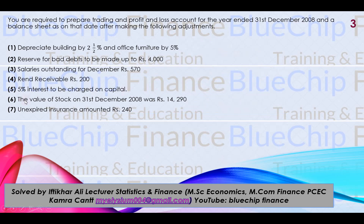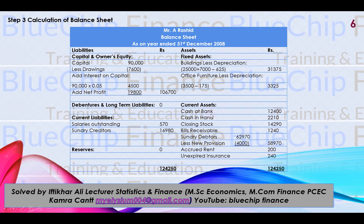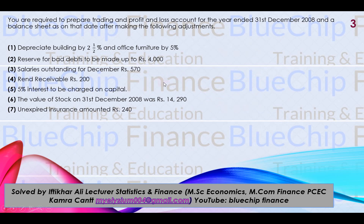The value of closing stock on 31st December 2008 was Rs 14,290. This is given in the adjustments. Closing stock is treated in two places: first, it is added to the credit side of the Trading Account (14,290), and second, it is treated as a current asset in the Balance Sheet. Note: if closing stock is given in the trial balance and not in the adjustments, it goes only to the Balance Sheet, not to the Trading Account.